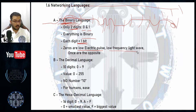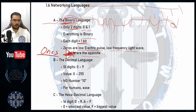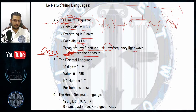Ones — to correct that — ones are the opposite: a high electric pulse or a high frequency light wave. This is what I mean by ones and zeros. That is the first language, and it is used only internally.